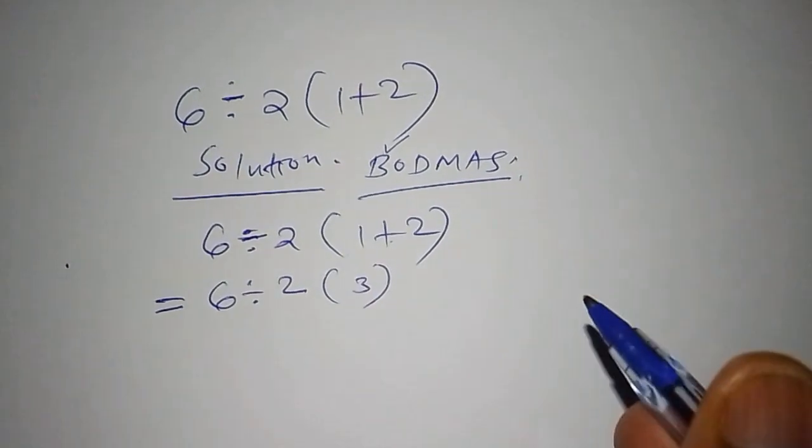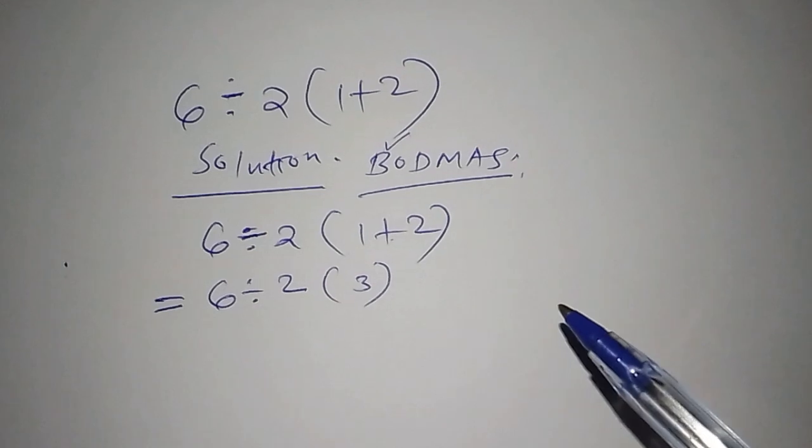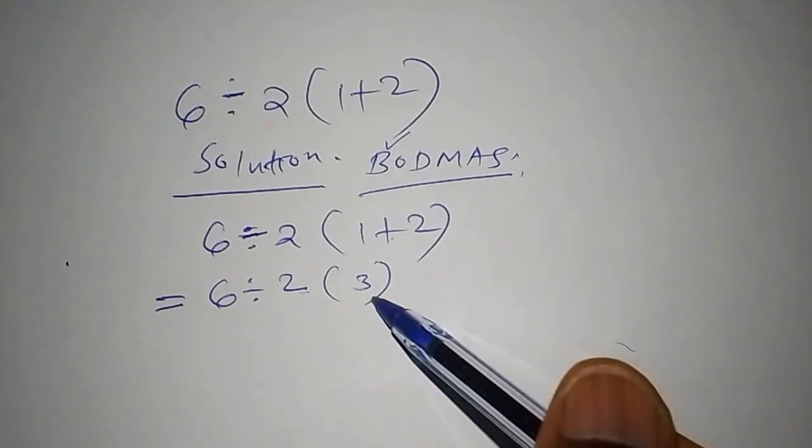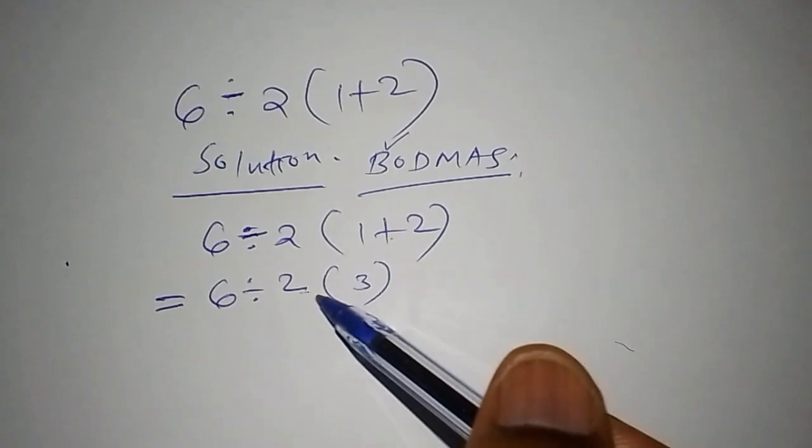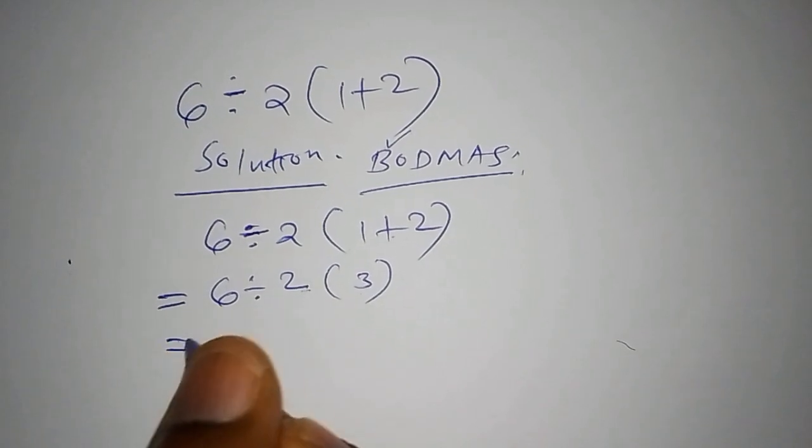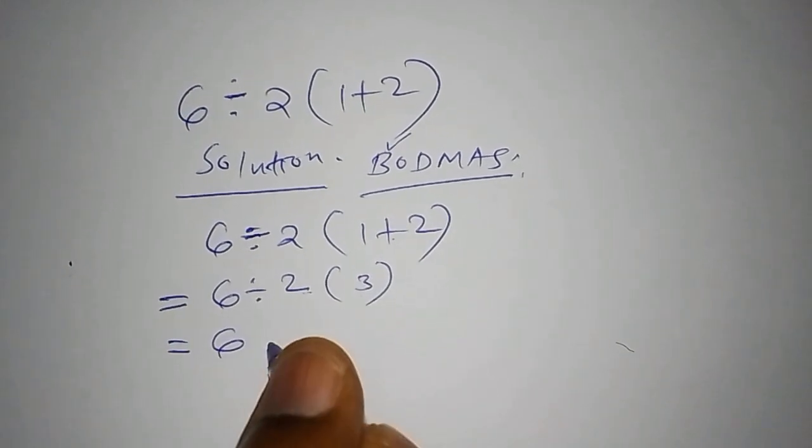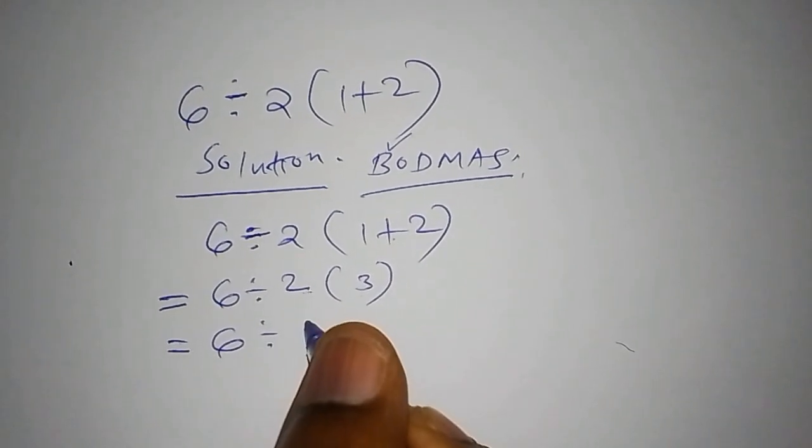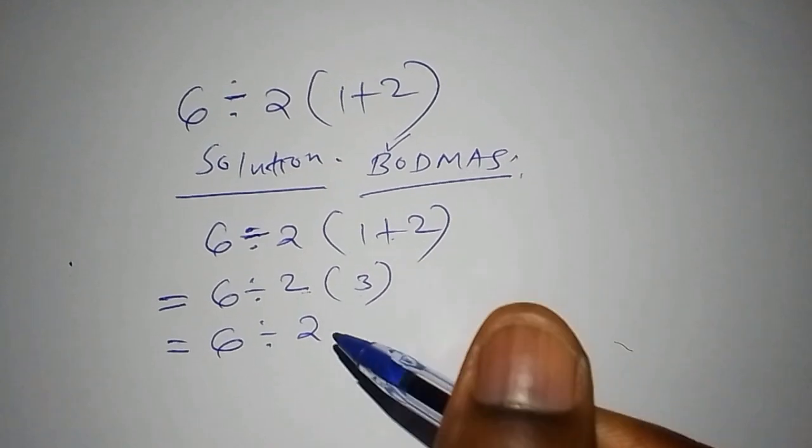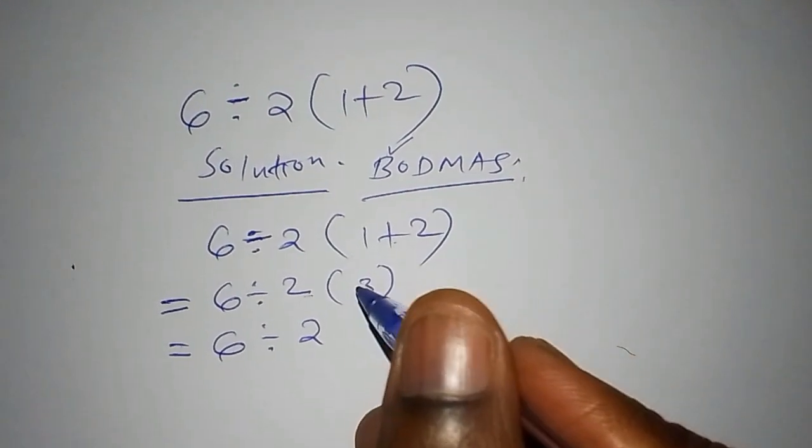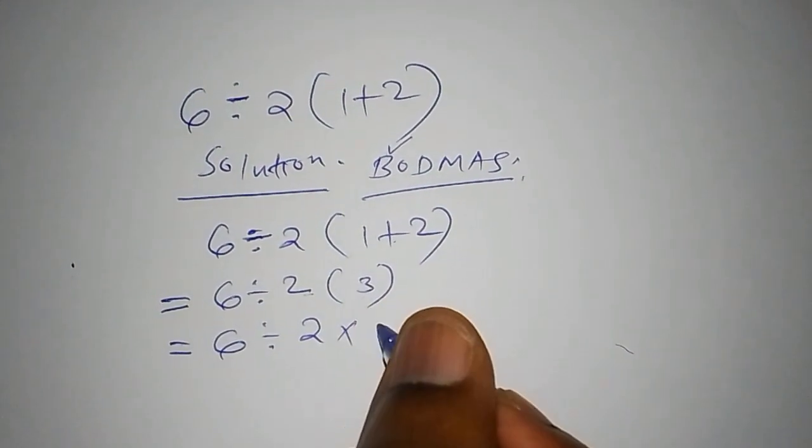So the next area that we are going to do, we are going to open the bracket. So we shall say that this one is equal to 6, then we divide by 2, then you multiply by 3.